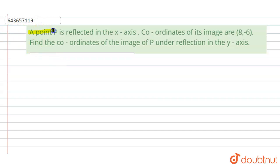Let us read out the problem. A point P is reflected in the x-axis. Coordinates of its image are given as 8, -6. Find the coordinates of the image of point P under reflection in the y-axis.